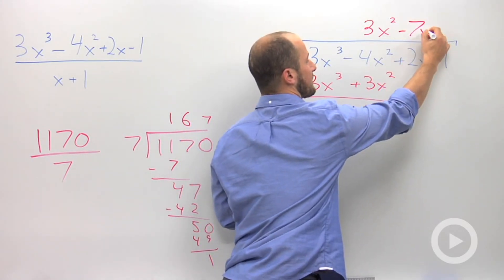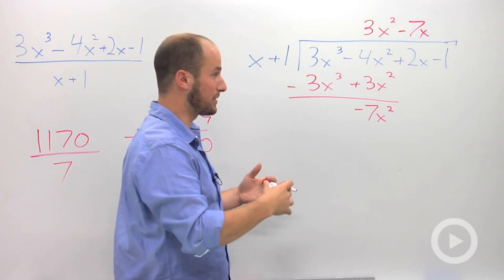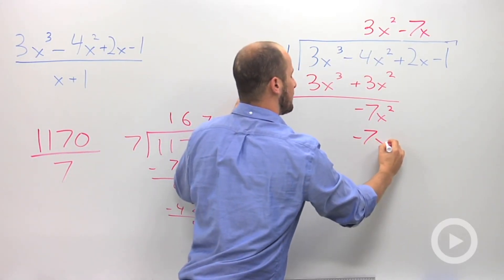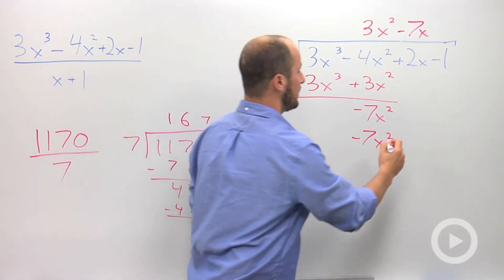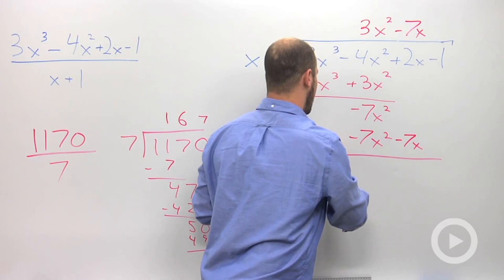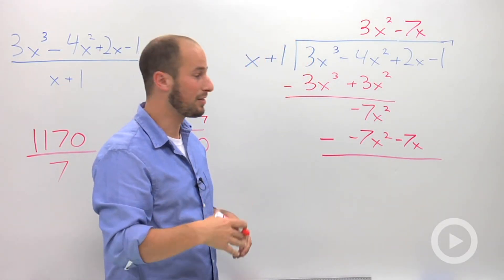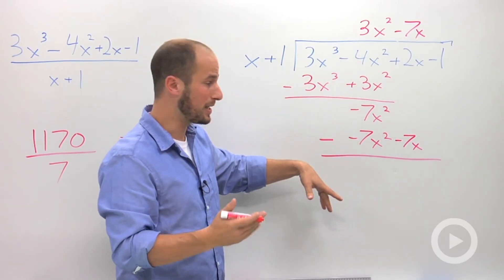So, negative 7x, and then we just want to multiply and subtract once again. So, negative 7x times x, negative 7x squared, negative 7x times 1 is negative 7x. Once again, we want to subtract, making sure we distribute that negative sign through. Negative 7x squared minus negative 7x squared, those cancel, which is what we wanted.